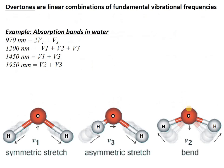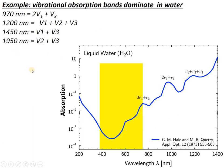It gets even more complicated — you can have what are called overtones, which are linear combinations of the fundamental vibrational frequencies. So when we look at the important absorption bands in water, a lot of them are actually combinations of the fundamental V1, V2, and V3 stretches and bends. Here's an absorption plot of liquid water with wavelength on the x-axis and absorption on the y-axis. We see peaks near 800 nanometers, near 1,000, and near 1,200 nanometers — each of those is some combination of the vibrational modes driving absorption of photons out in the infrared.